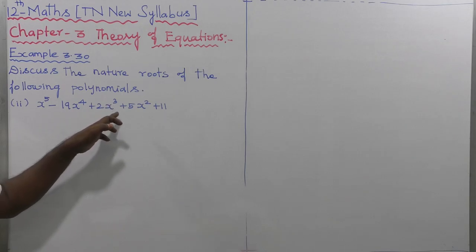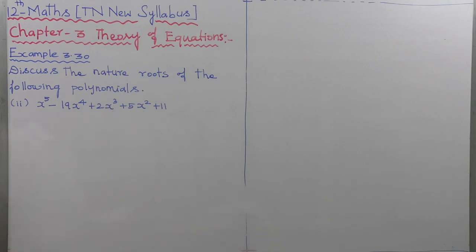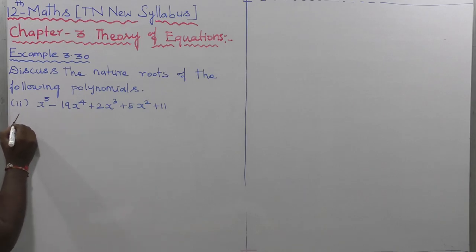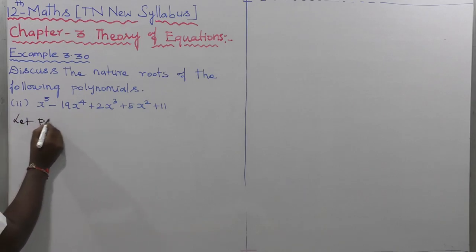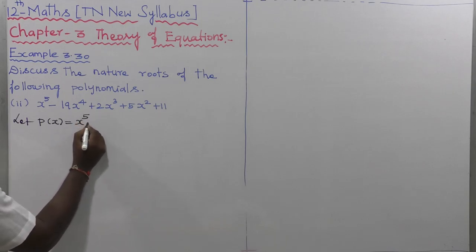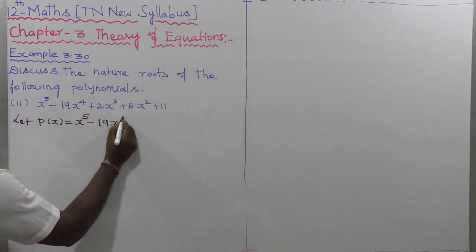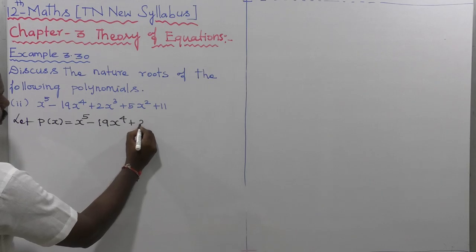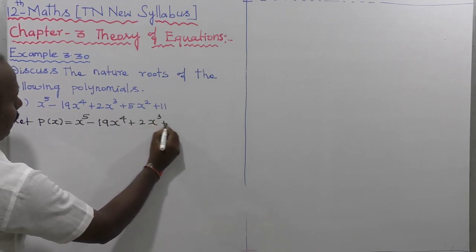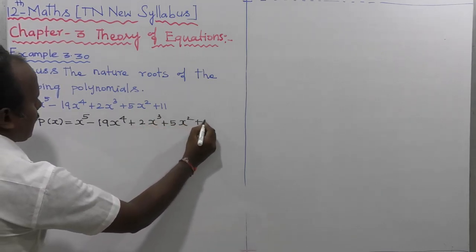Example 3.30: Discuss the natural roots of the polynomial. So first of all, P of x equal to x power 5 minus 19 x power 4 plus 2 x cube plus 5 x power 2 plus 11.